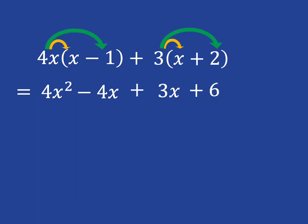Now we're in a position where we're just adding and subtracting terms, and in algebra when we're just adding and subtracting, we need to look for like terms. The like terms here are minus 4x and plus 3x because those terms just have an x in them.